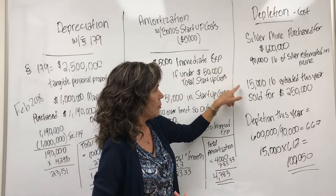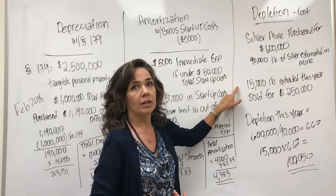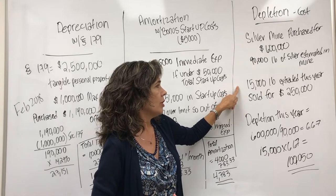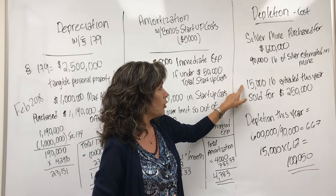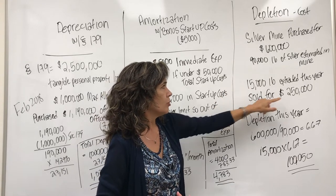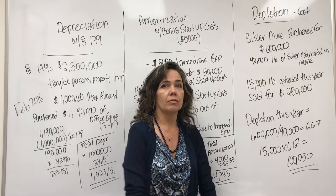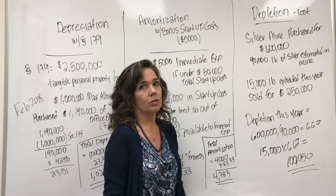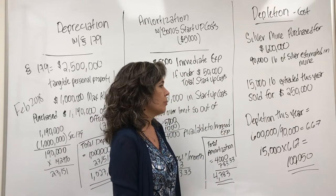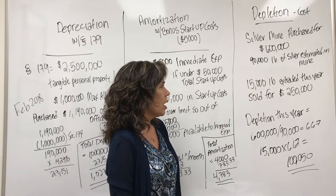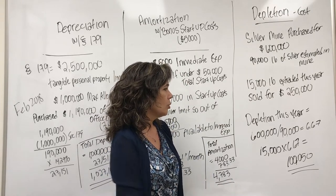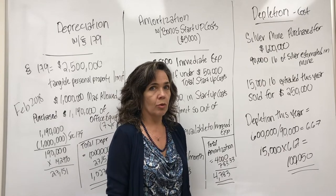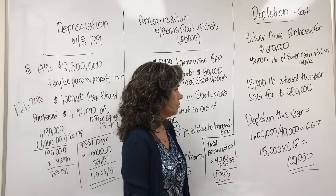To continue with the facts: in my first year of operation, I extracted 15,000 pounds of silver and I sold those 15,000 pounds for $250,000. So the question is: what is the depletion for this current year?